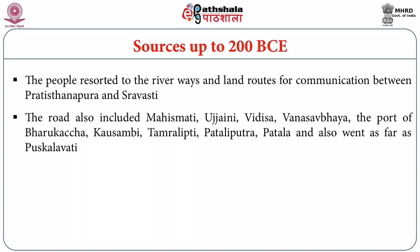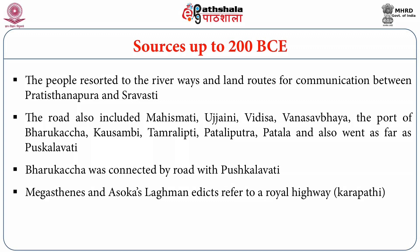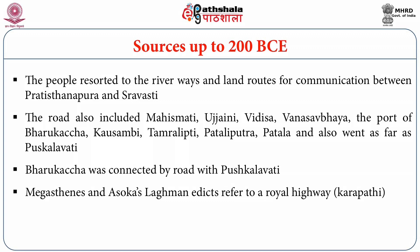The road included Mahishmati, Ujjaini, Vidicha, Vanasabhaya, the port of Bharugachya, Kaushambi, Tamralipti, and Pataliputra, and also went as far as Pushkalavati. Bharugachya was connected by road with Pushkalavati. Megasthenes and Ashoka's Lumbini edicts referred to a royal road — Karapathi. By this time we have learned that early Indians not only developed agricultural practices and surplus production, but also developed trading activities, particularly sea trade.